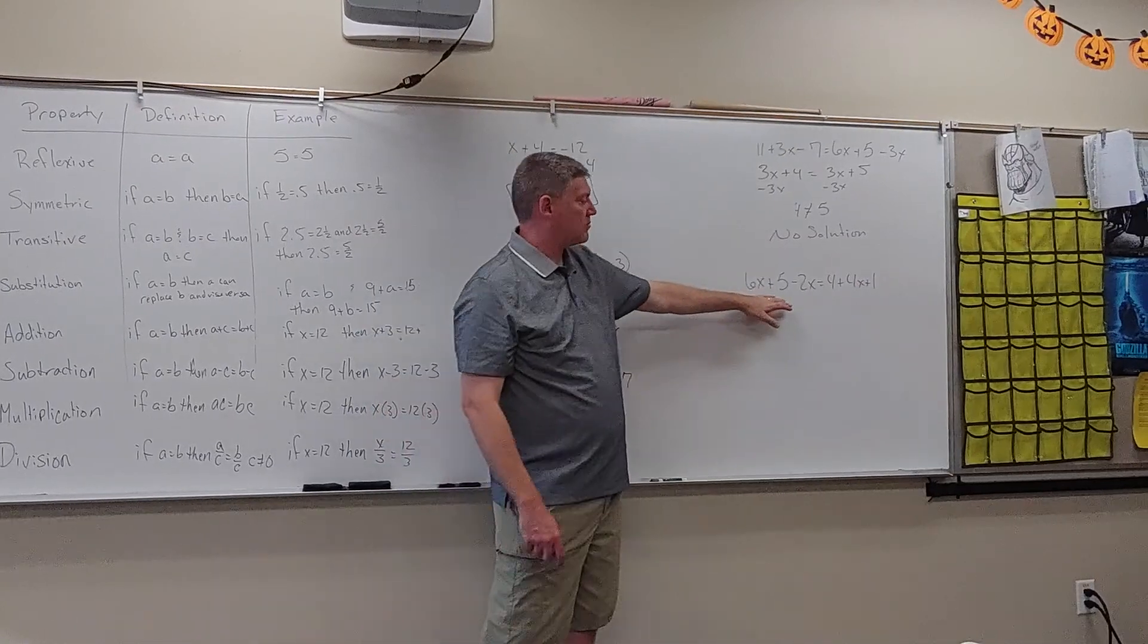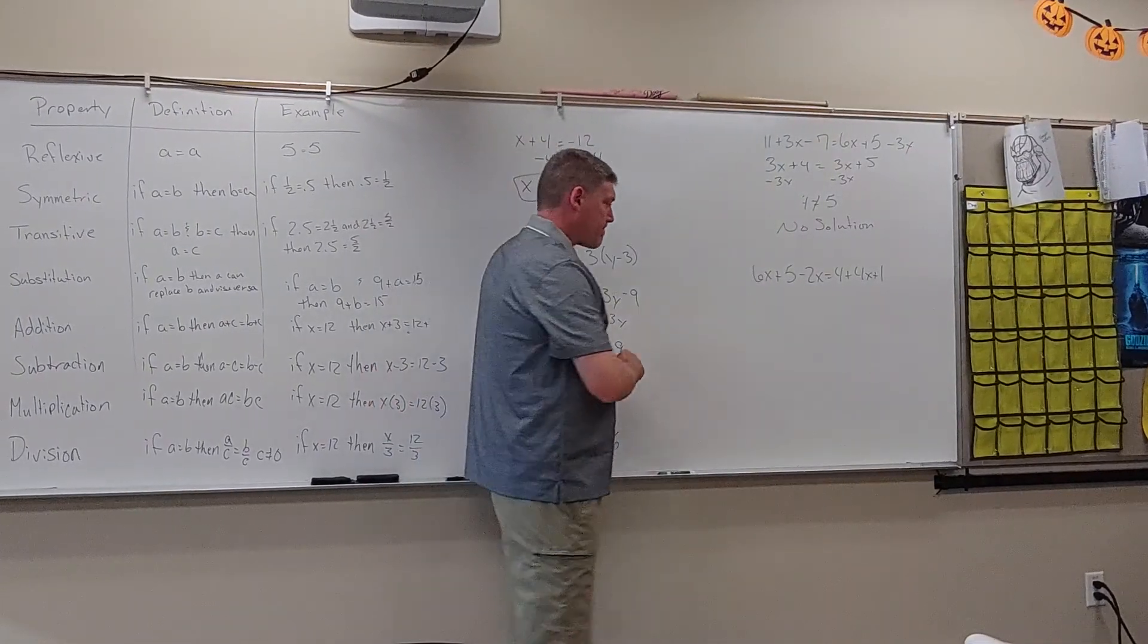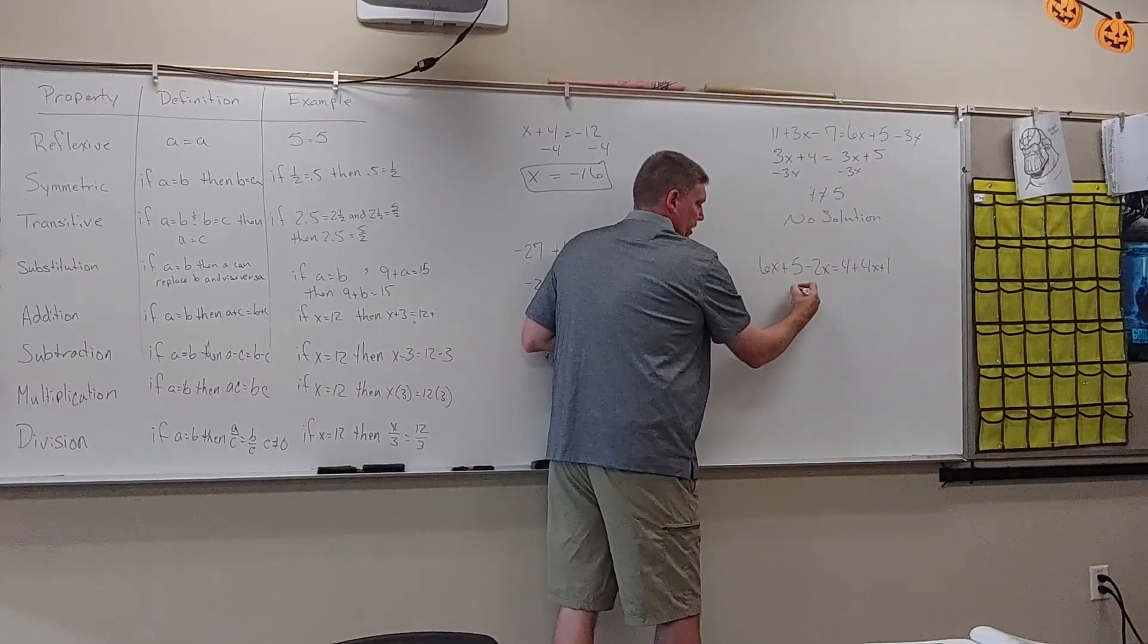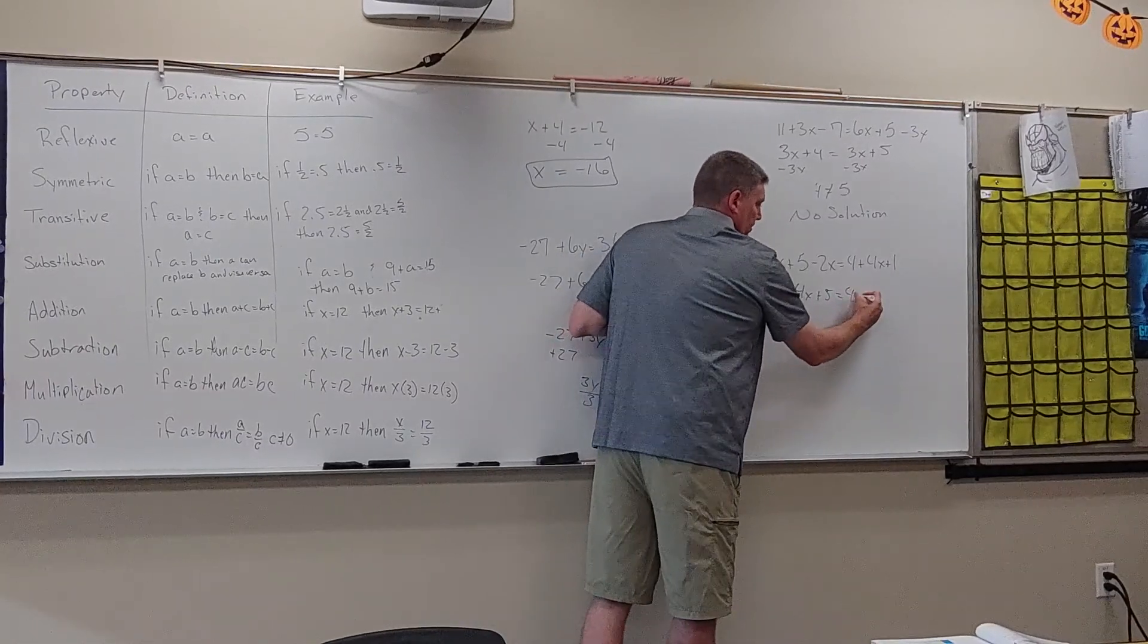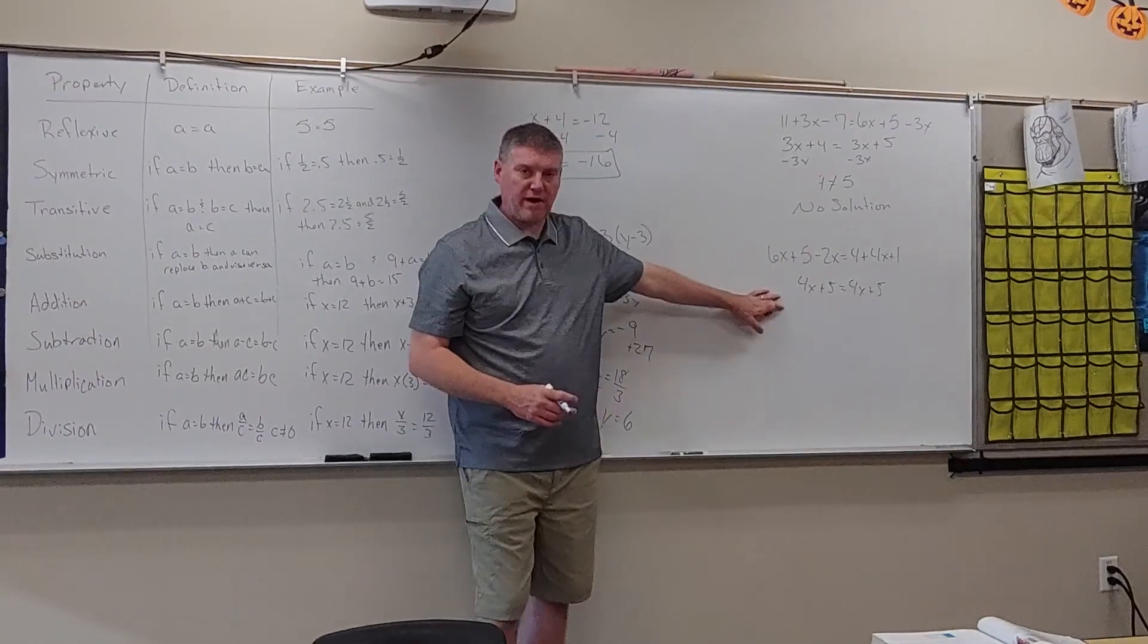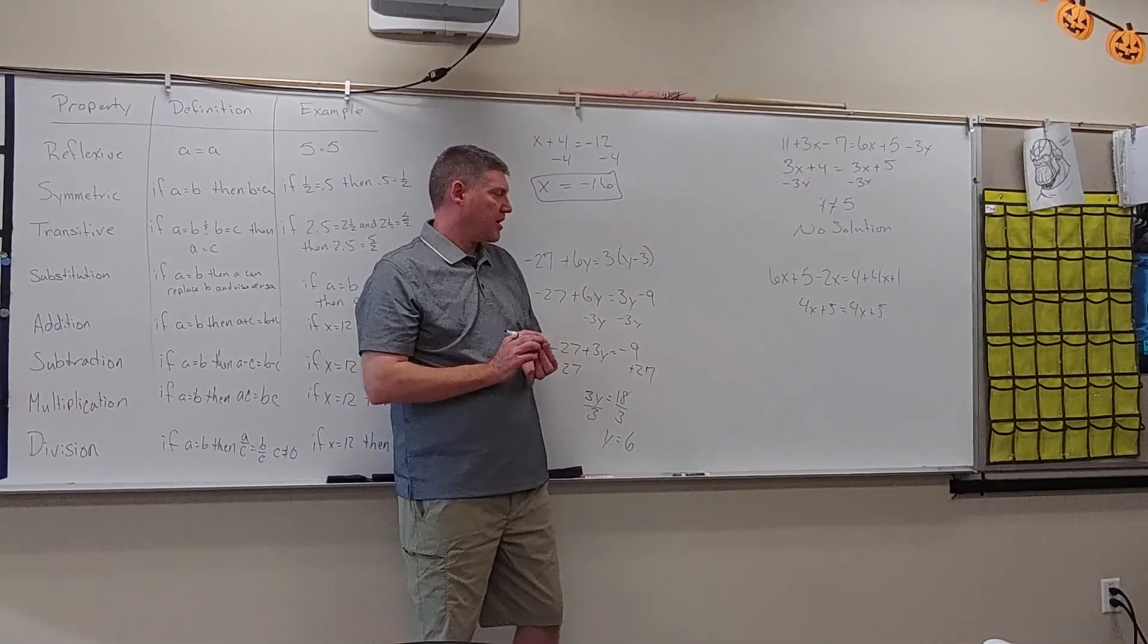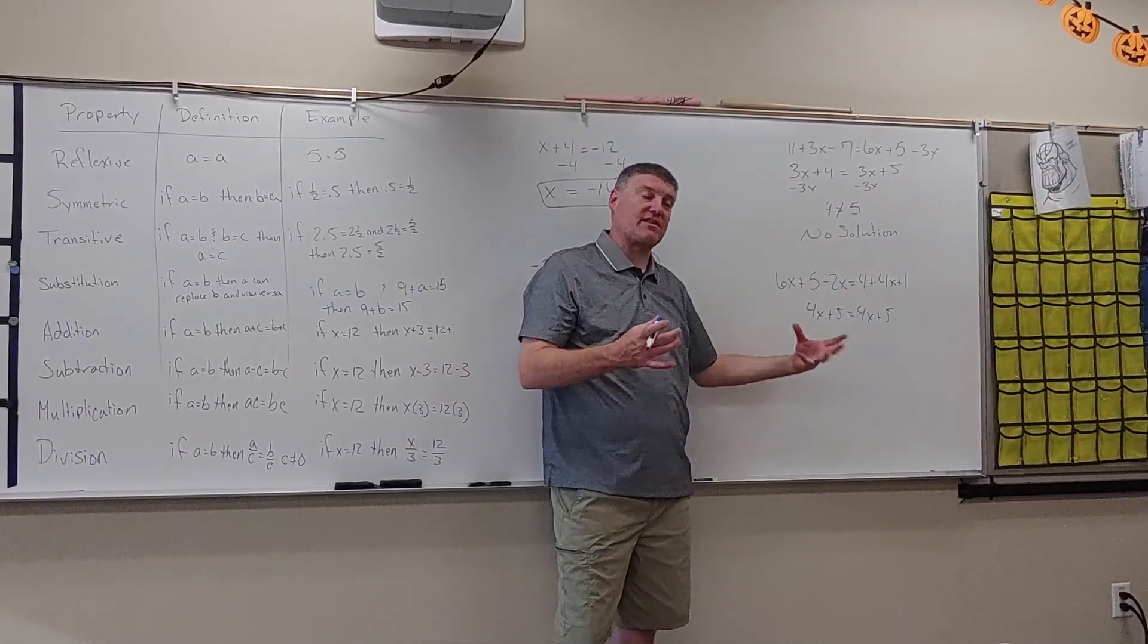So here in our next one, we're going to do that same process of simplifying. I'm going to combine like terms. I have 6X minus 2X, which gives me 4X plus 5 equals 4X plus 5. Now right here, you might actually see something. We're going to take it one step farther. Some of you might notice that they have the same on both sides. Everything is identical.